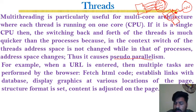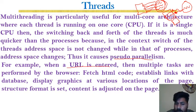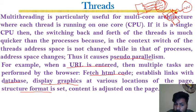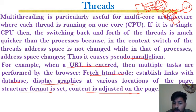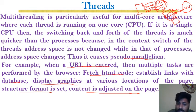For example, when a URL is entered in a browser, multiple tasks are performed: fetch HTML code, establish links with the database to deliver data, display graphics, set format structure for tables and images, and adjust content on the page — what should be displayed at what position. All these are basically threads of the browser.